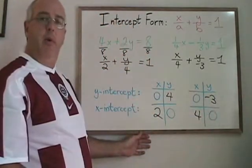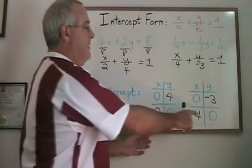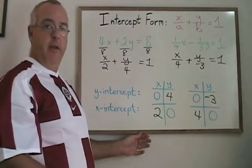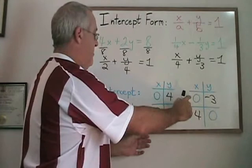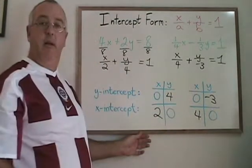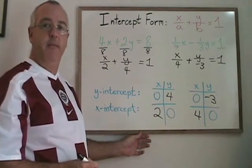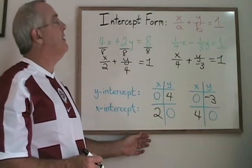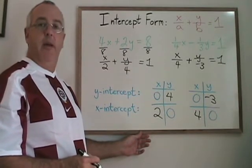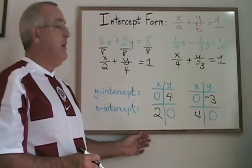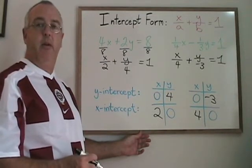Again, if we plug x equals 0 and y equals 0 into the original equation, we can verify with algebra that these are indeed the correct y-intercept and x-intercept for this straight-line equation. This is how we can use intercept form, where a or b are not equal to 0, to quickly find the x-intercept and y-intercept of any straight-line equation.